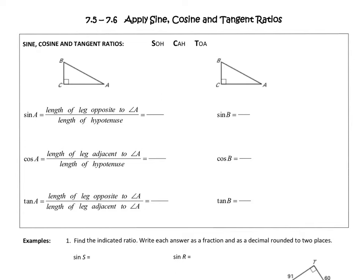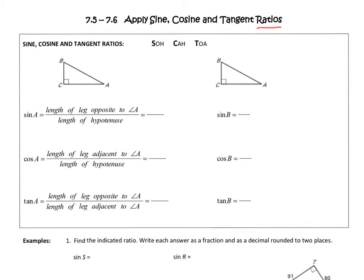The first thing I would like to mention is that since each of these are ratios, they're going to include two parts. For example, a ratio could be written like 1 to 2, or like a fraction. The point is that for these ratios, I'm going to be comparing two different parts in a right triangle. So in order for these basic ratios to apply, we must be dealing with a right triangle.